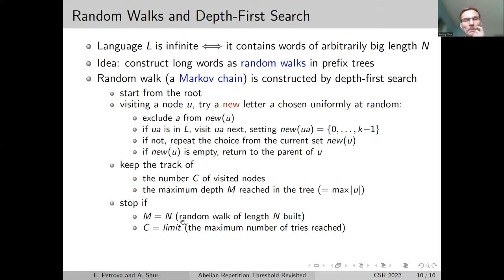During the search, we keep track of the number of visited nodes and the maximum depth we reached in the tree - the maximum length of the word we have constructed. We stop if we reach the required length or if we reach the limit of the number of nodes. If you can repeat this multiple times, we can do some statistics, formulate conjectures, and so on. This is already science, not pure mathematics.